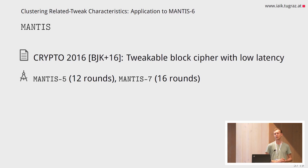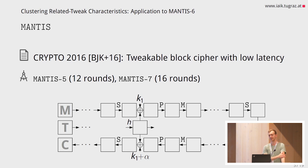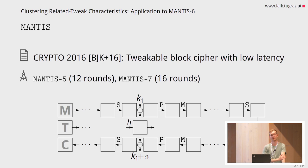MANTIS was introduced at Crypto 2016. It's a tweakable block cipher that also has the goal of very low latency. There are two official variants: MANTIS-5 with 12 rounds and MANTIS-7 with 16 rounds. In addition to using the Tweaky framework, MANTIS is also a reflective cipher, where the alpha reflection property means we can use the same circuit for encryption and decryption. This also induces symmetry on both sides of the encryption process.